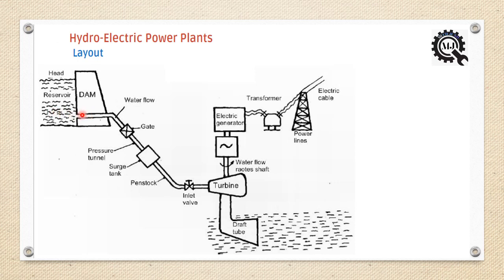This potential energy is converted into kinetic energy when the water flows down. When the water hits the turbine, the turbine starts to rotate. When the turbine rotates, the kinetic energy converts into mechanical energy. Then the electric generator converts the mechanical energy into electrical energy.